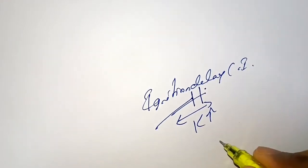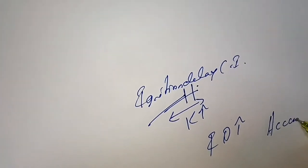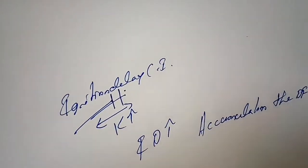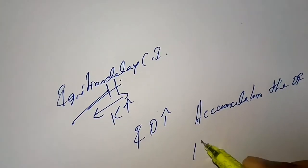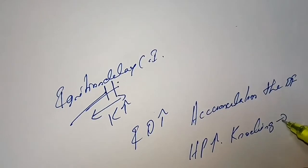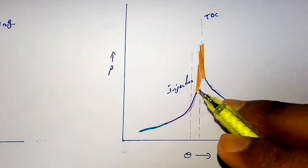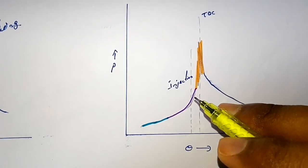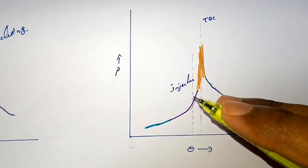As the ignition delay period increases, the tendency for knocking also rises. If the ignition delay is very high, it leads to a high accumulation of diesel fuel in the combustion chamber. When combustion finally initiates, the large accumulated fuel causes a very high pressure rise, leading to knocking in the diesel engine. This unwanted pressure rise happens at the beginning of the combustion process, due to fuel accumulation from the ignition delay.